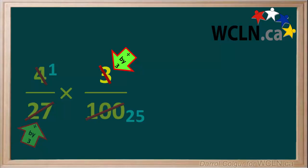3 divided by 3 is equal to 1, so we'll write a 1 here by the crossed out 3. We'll also divide 27 by 3, which comes out to 9. So we'll write in a little 9 here by the crossed out 27.